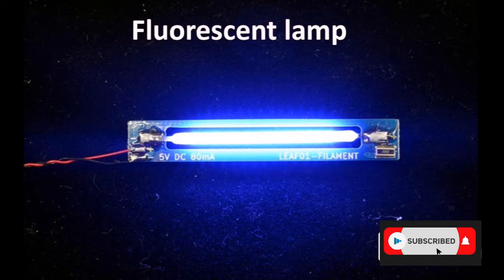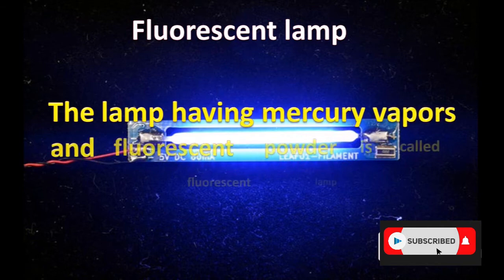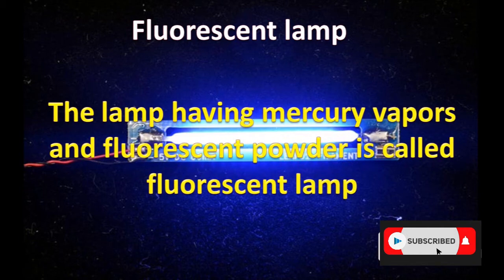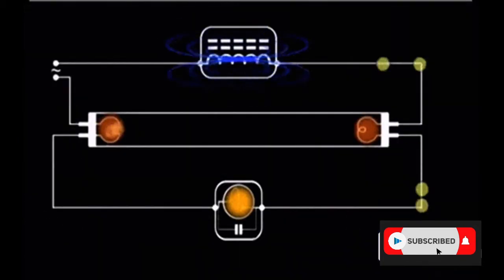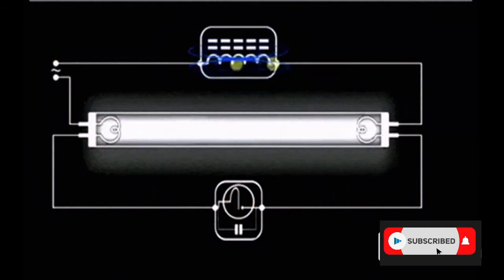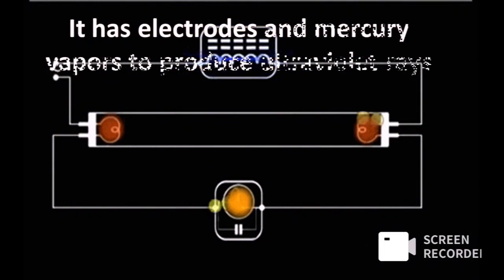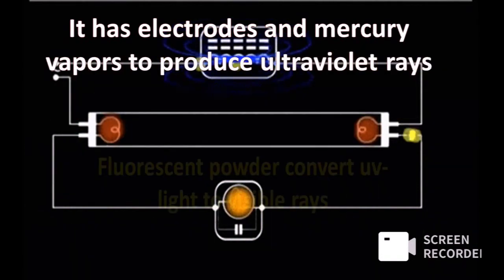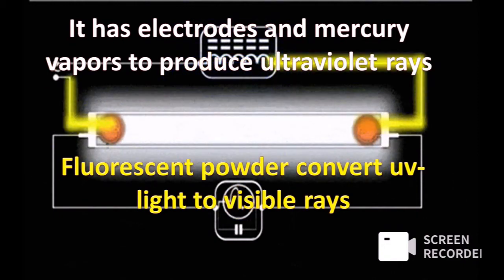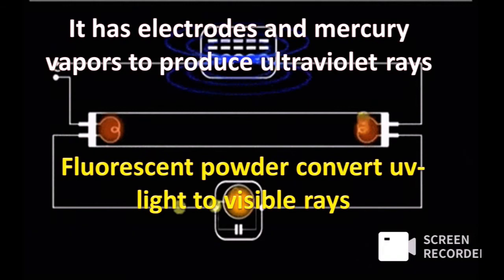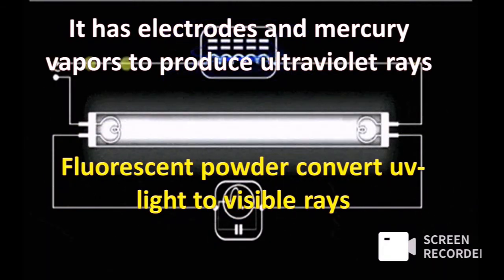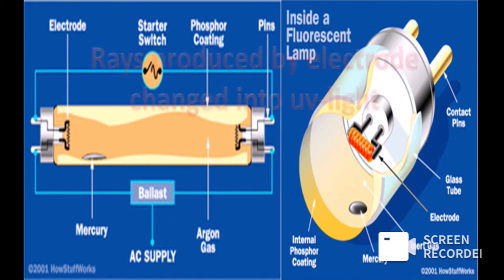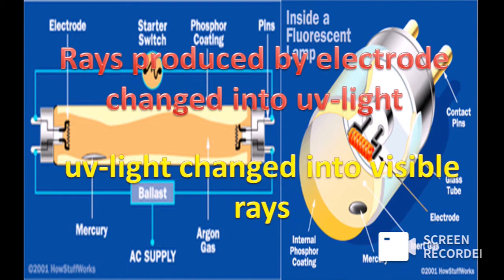Fluorescent lamp: this lamp contains mercury vapors and fluorescent powder. It has electrodes and mercury vapors to produce ultraviolet rays. The fluorescent powder then converts those ultraviolet rays into visible rays. Rays produced by the electrodes are changed into ultraviolet light by mercury, and the ultraviolet light is then changed into visible rays by the fluorescent powder.